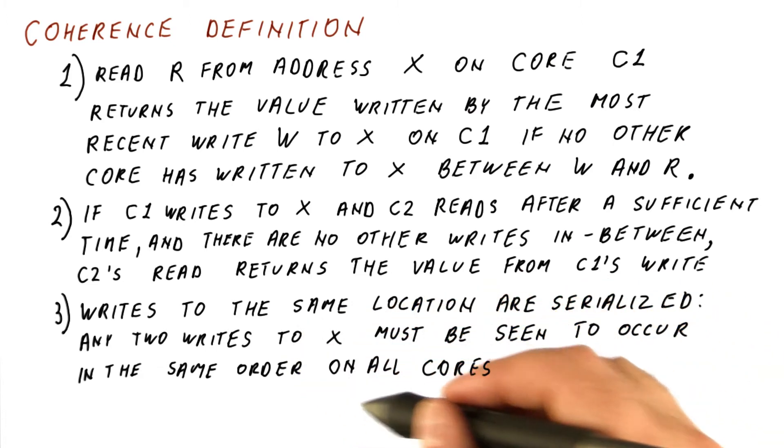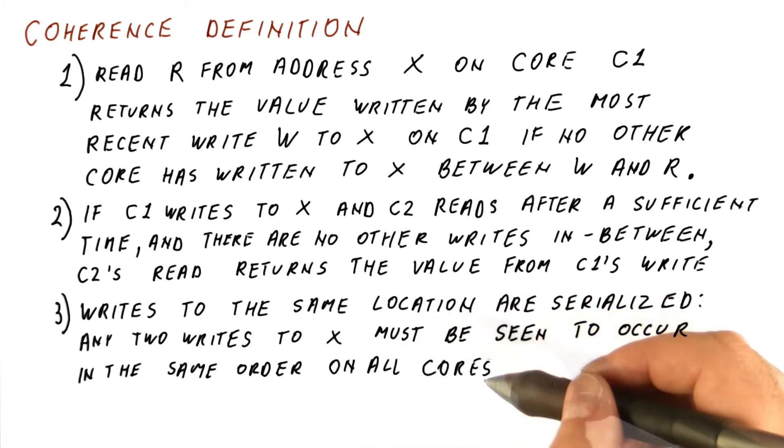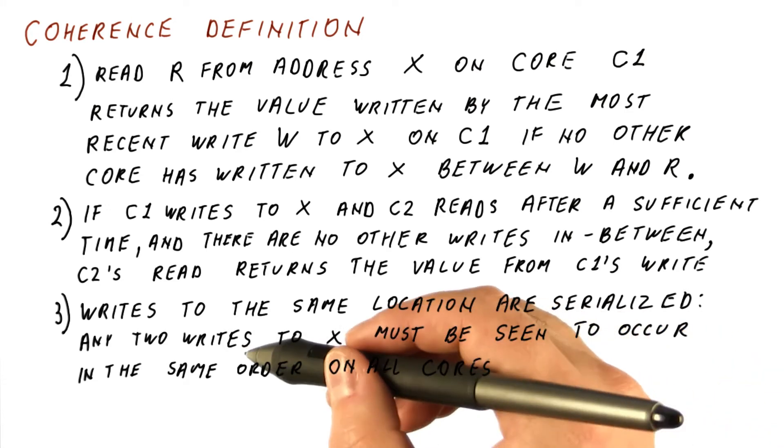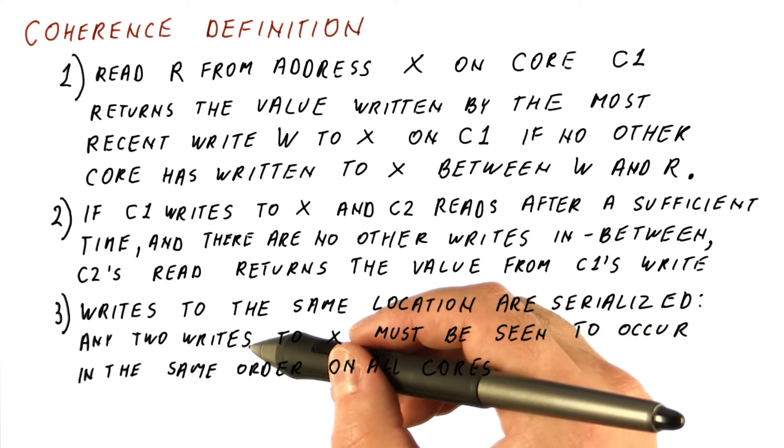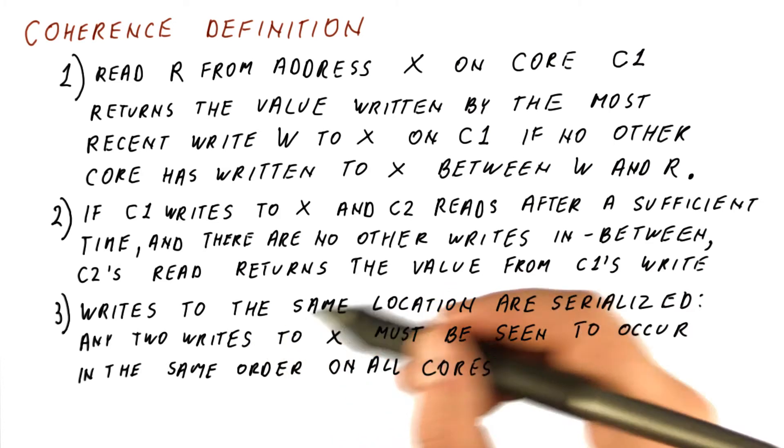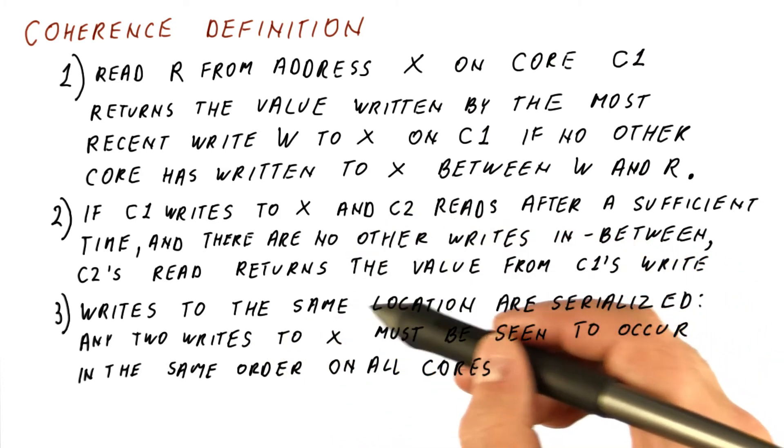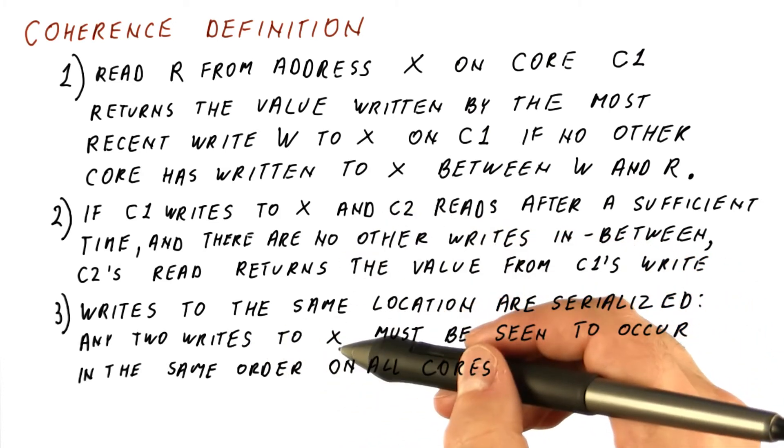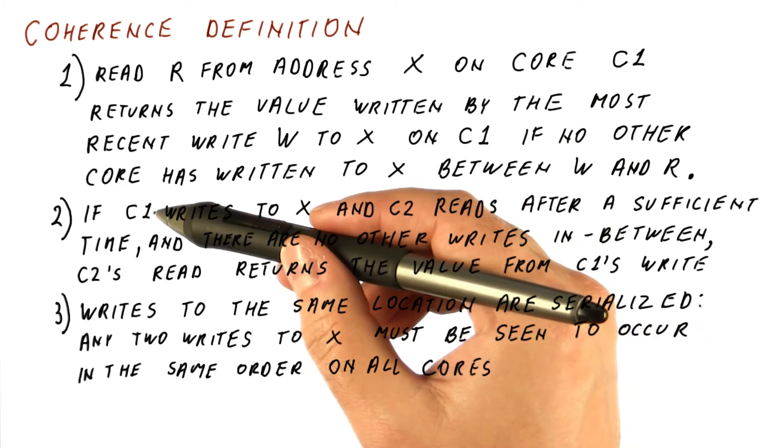What this part of the definition really says, different cores should not be able to disagree about which write occurred first and which occurred second. Note that the second part of the definition doesn't really require this to happen.